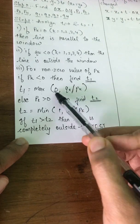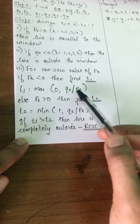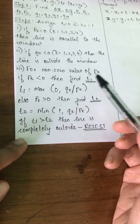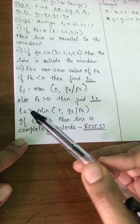For that, my formula is t1 equals max of (0, qk/pk). I will be having two values and I have to select the maximum of those two values—that will be the value for t1. It will become very clear once we see a numerical on this method.